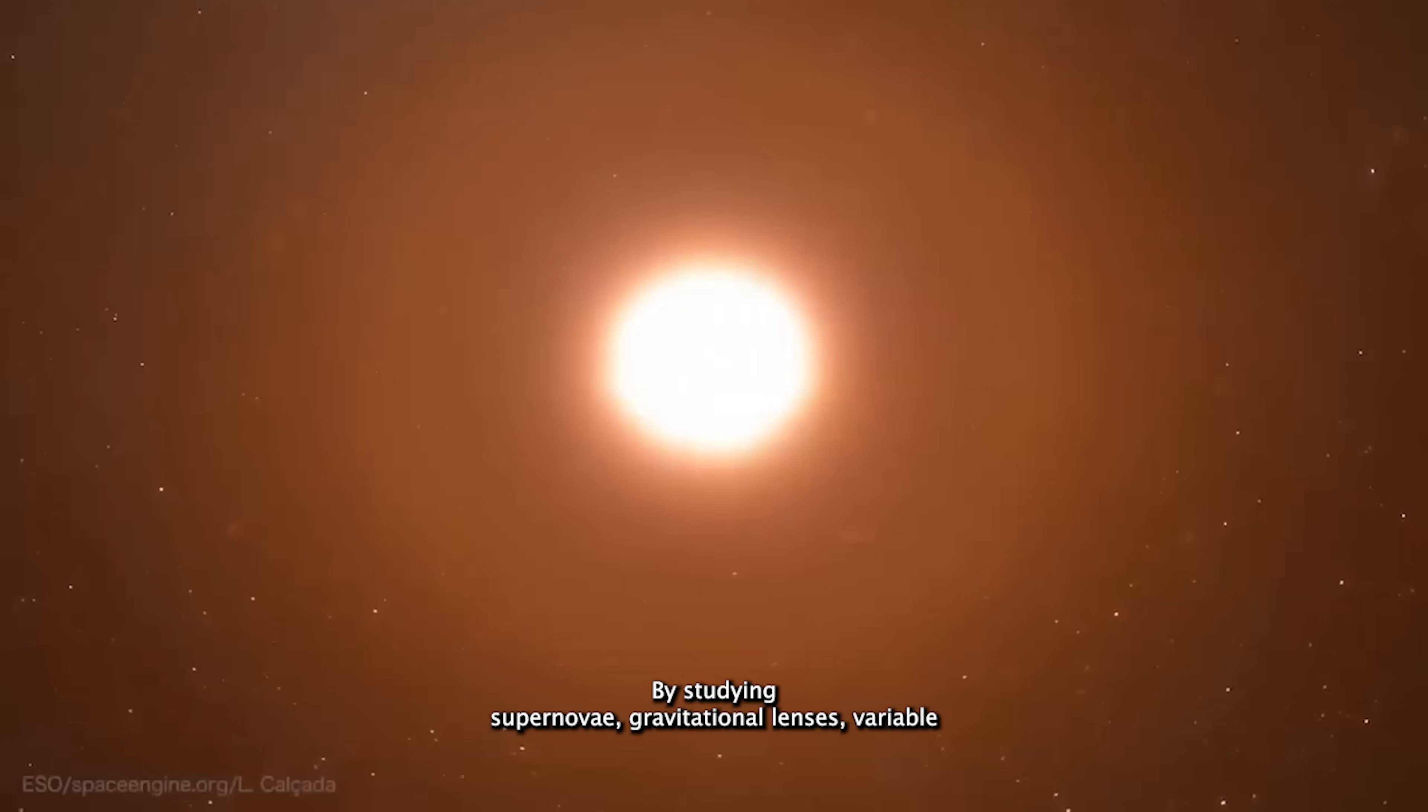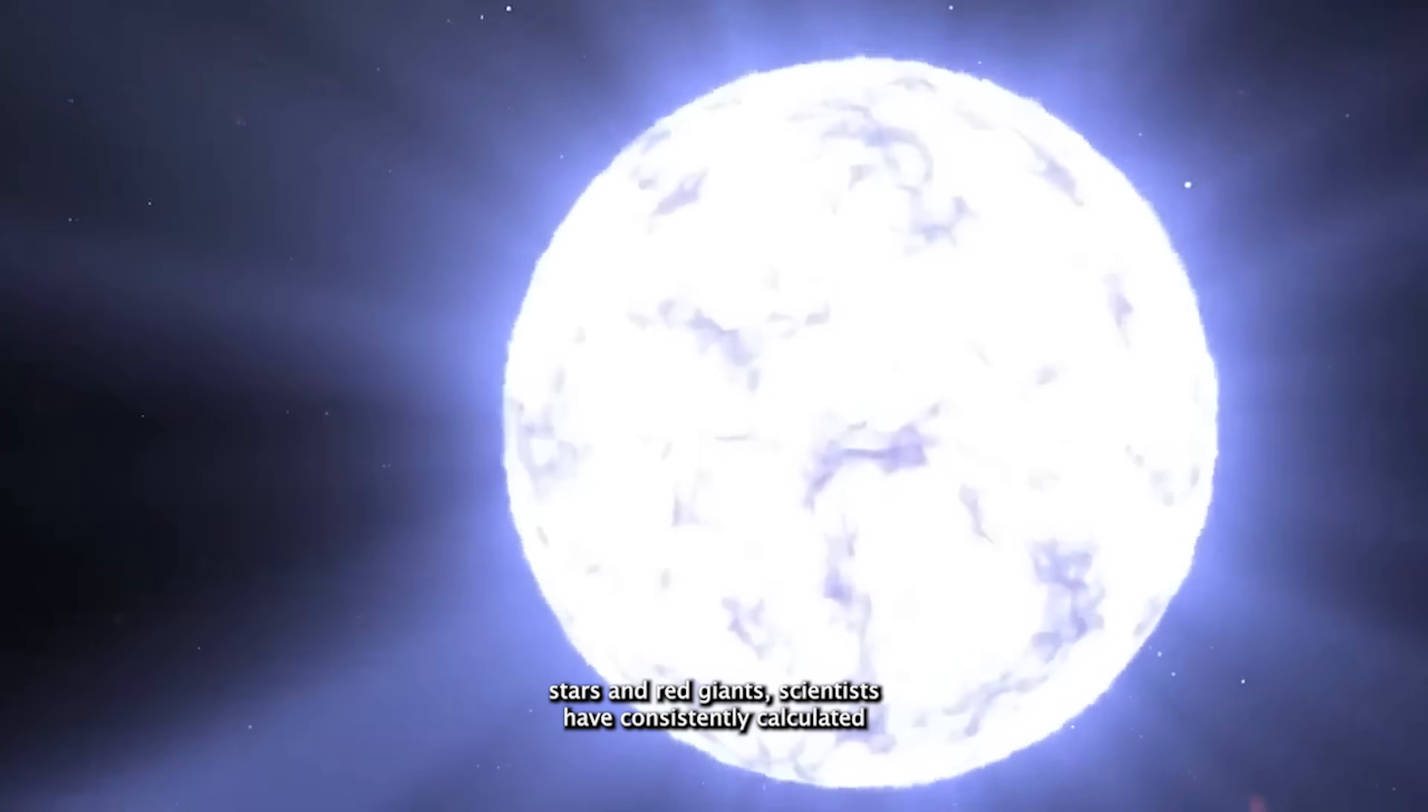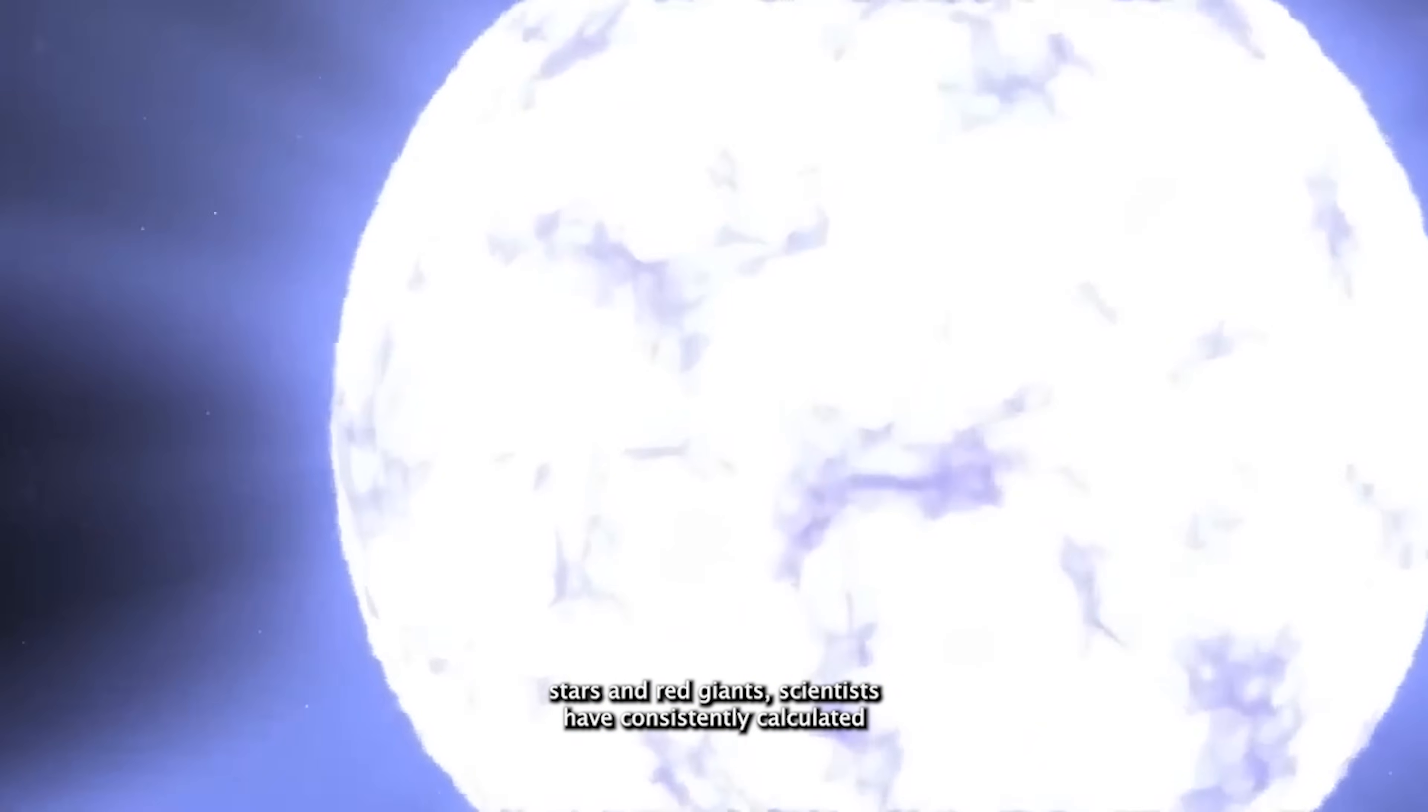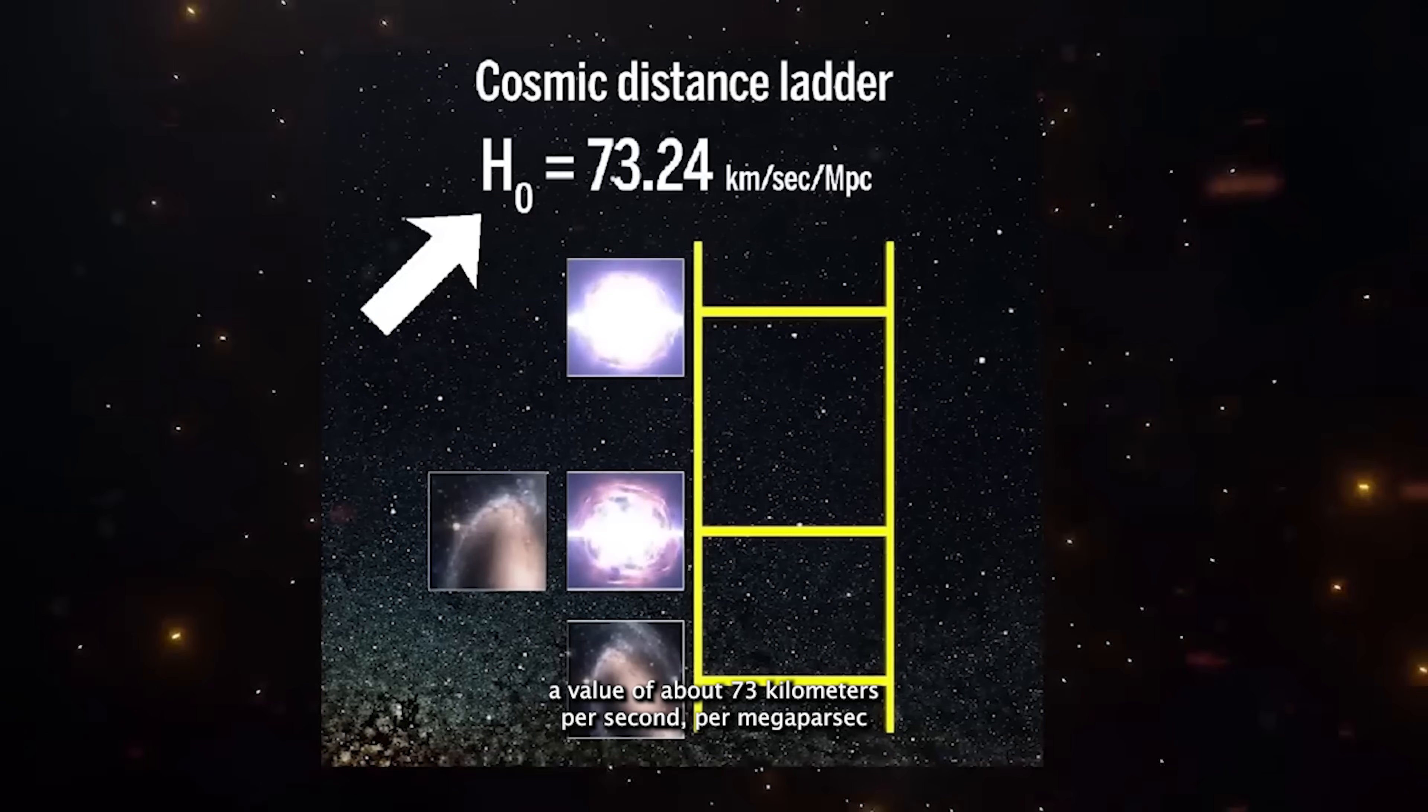By studying supernovae, gravitational lenses, variable stars, and red giants, scientists have consistently calculated a value of about 73 km per second per megaparsec.